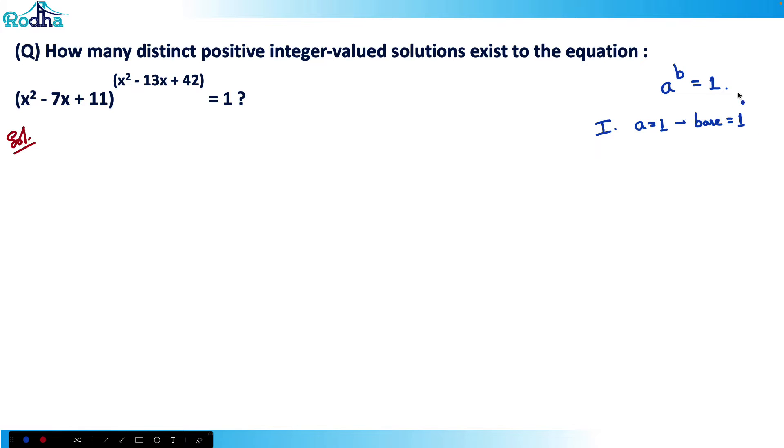Second, when b equals 0, any number raised to 0 is always 1. Third, minus 1 raised to an even power is always 1. These three are the possibilities. Let's check them one by one.